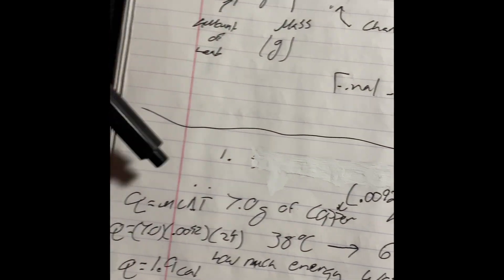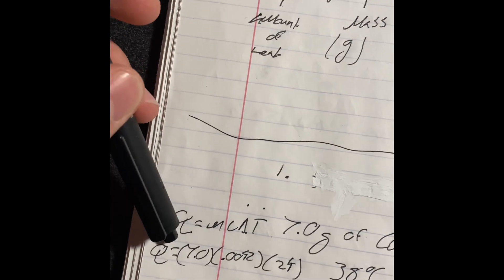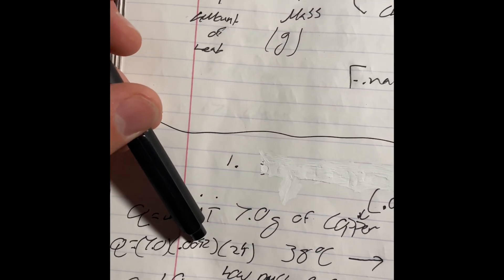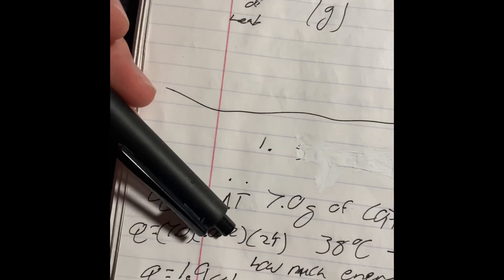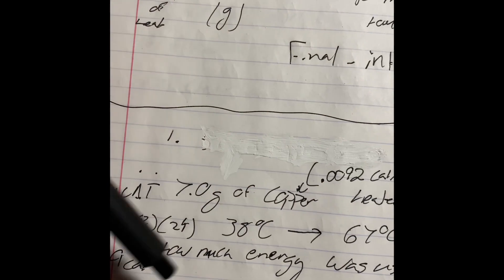So, we're looking for Q. You go to the formula, Q equals MCAT. Then, you're going to plug in the mass, which is 7. Then, you're going to plug in the specific heat capacity, which is given to us over here, 0.0092, and then you're going to plug in the change of temperature, which is final minus initial, which is 29.